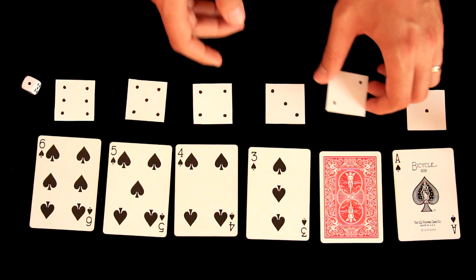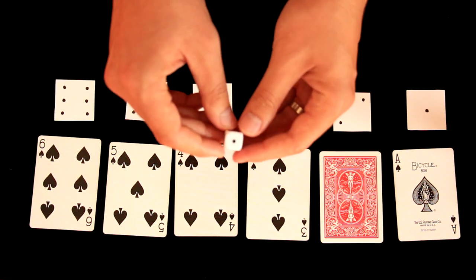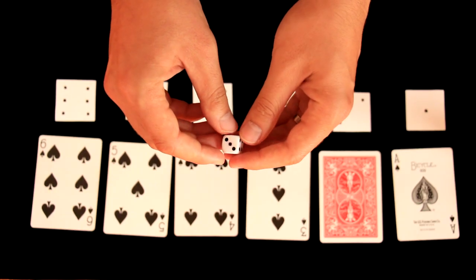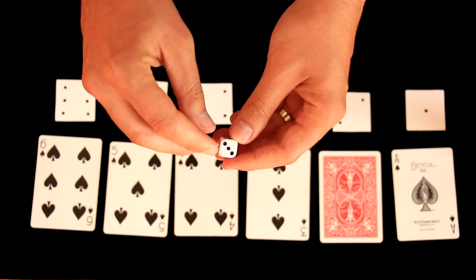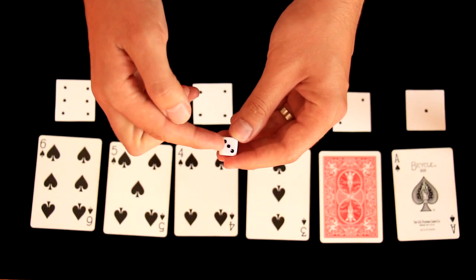Well number two is a very special number in our case because you will take your dice and you will search for number two. When you find it you will draw a little dot in the center so it will seem that it is now number three.